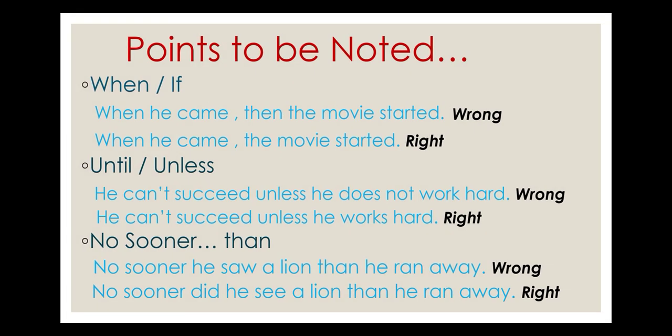Now, children, while using these conjunctions we may make some common mistakes. The first concerns 'when' and 'if.' The mistake is using two conjunctions in the same sentence — for example: 'When he came, then the movie started.' This is wrong because 'when' and 'then' are both used together. The correct sentence is: 'When he came, the movie started' — use only one conjunction.